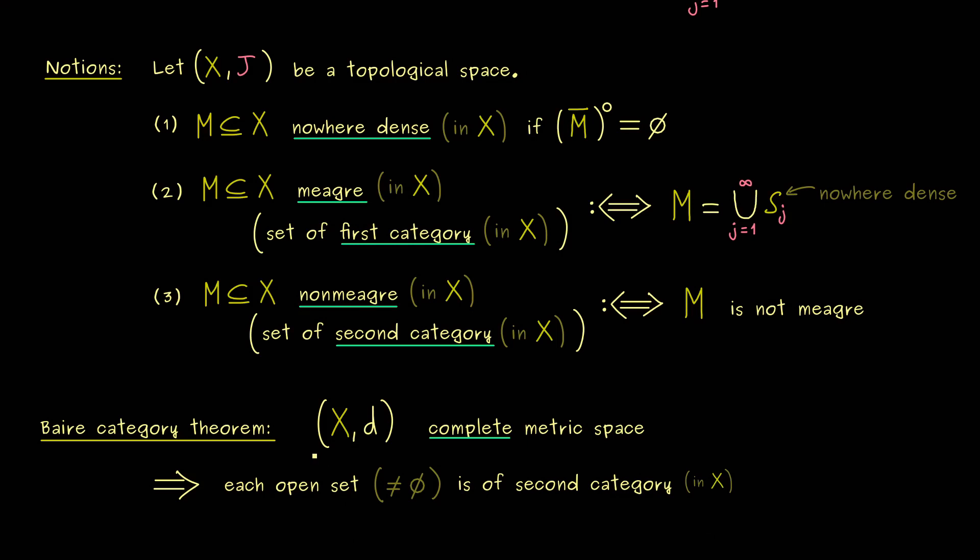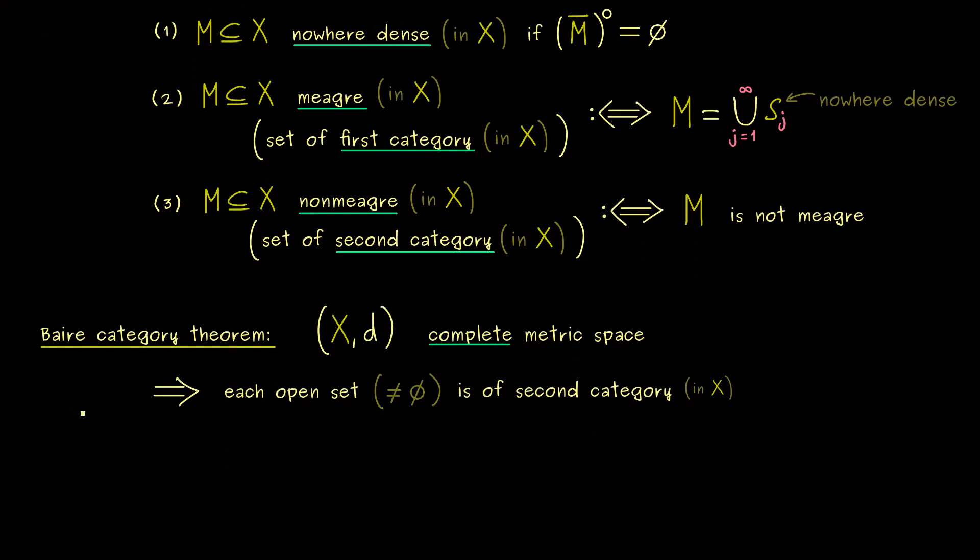So I mean it's not meager, it's of second category in X. In other words a non-empty open set in X cannot be written as a countable union of nowhere dense sets. And there you should immediately see completeness is very important. Because the rational numbers are a counter example immediately. We see that because the rational numbers can be written as a countable union of single points. However it does not work with the real numbers which form a complete metric space. Ok there we have it. This is also a version you can remember as the Baire category theorem.